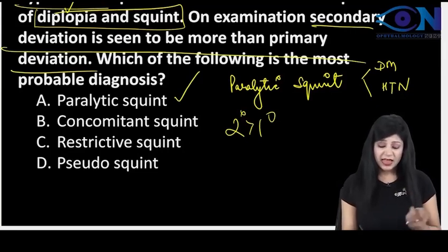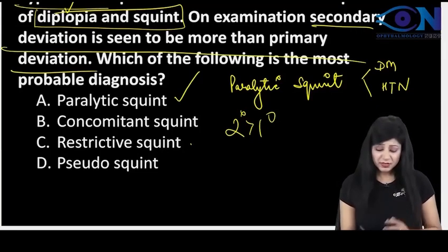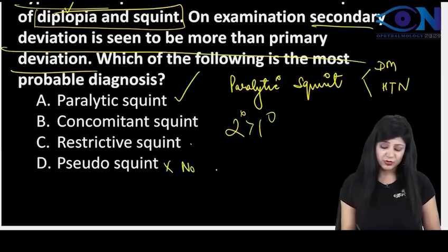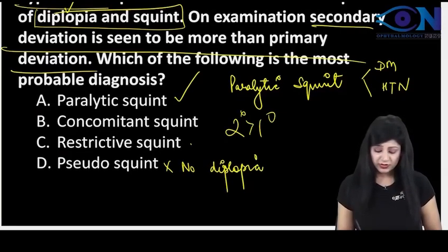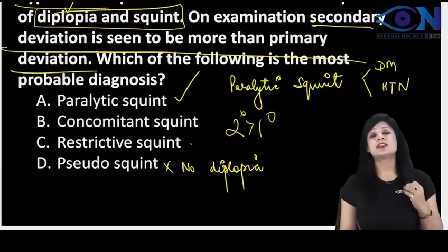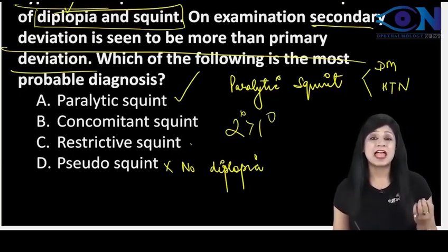Pseudo squint - there will be no diplopia. Concomitant squint and the restrictive squint - we can have but they are less common.